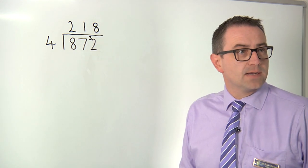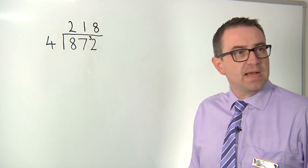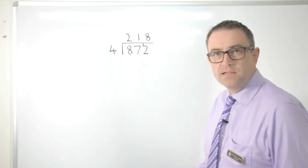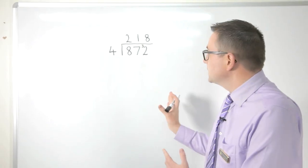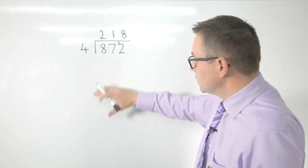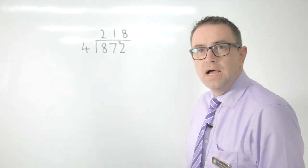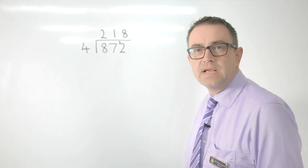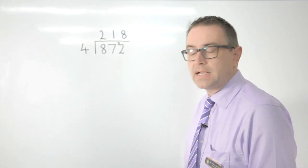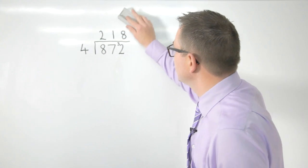Now irrespective of whether you're using the chunking method from the previous clip or whether you're using short division which can then go on to long division, children have to then be able to handle remainders that they may encounter. If I give you an example, so if we take a simple calculation just to make it easier for us right now of 87 divided by 7...